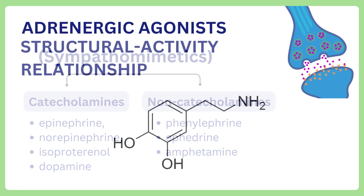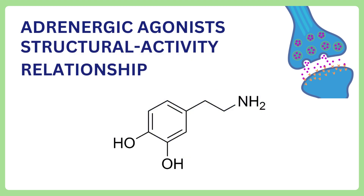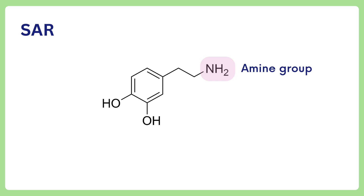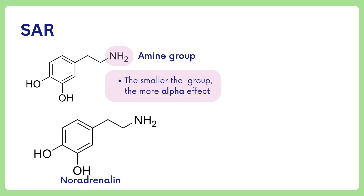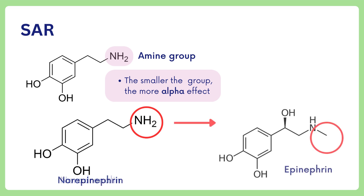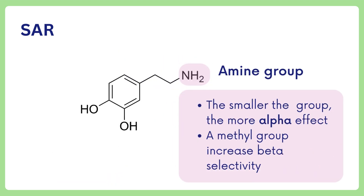Let's dive more into the structure-activity relationship of sympathomimetics. The amine group consists of the terminal nitrogen. The smaller the group, the more alpha effect. For example, noradrenaline has no substitution here and is a potent alpha-selective agonist. Adding a short methyl group gives adrenaline, which has a potent non-selective beta effect. Addition of a methyl group generally increases beta selectivity.